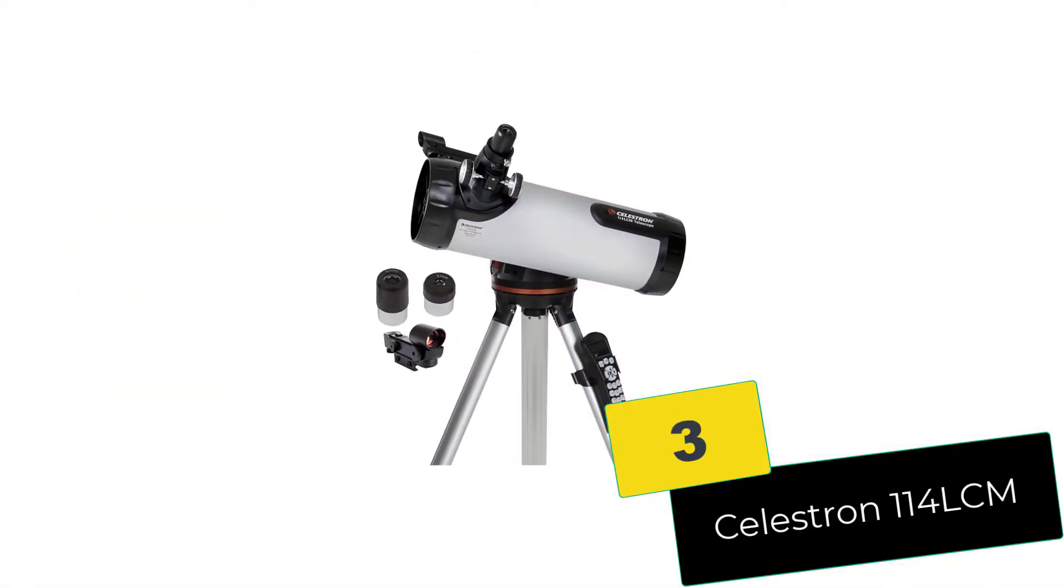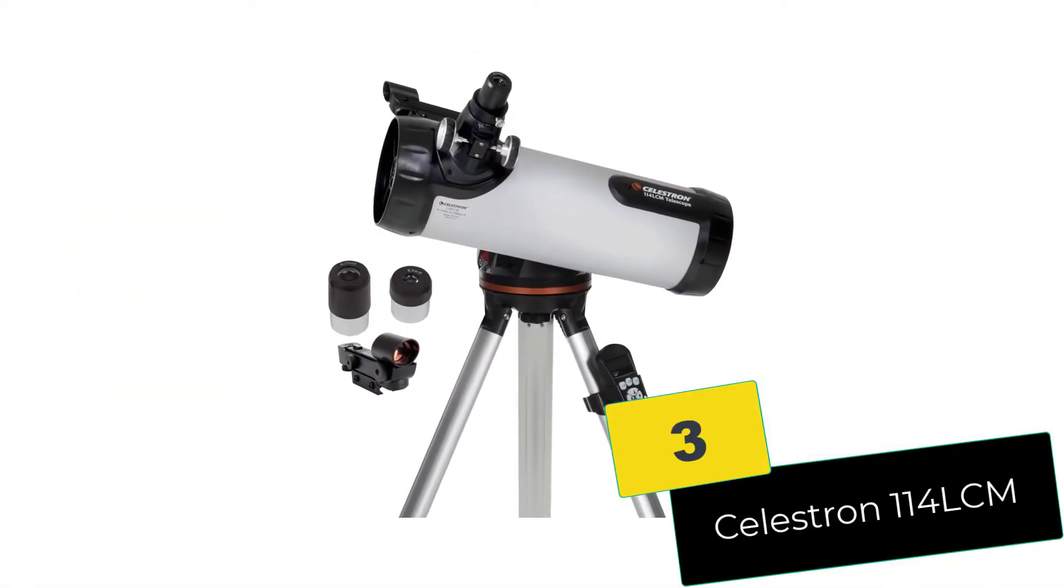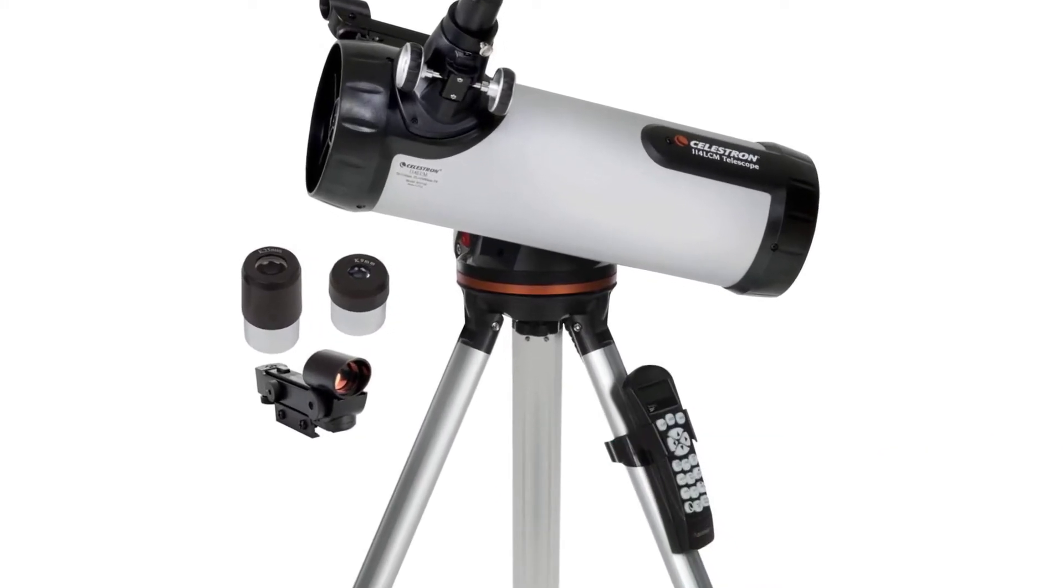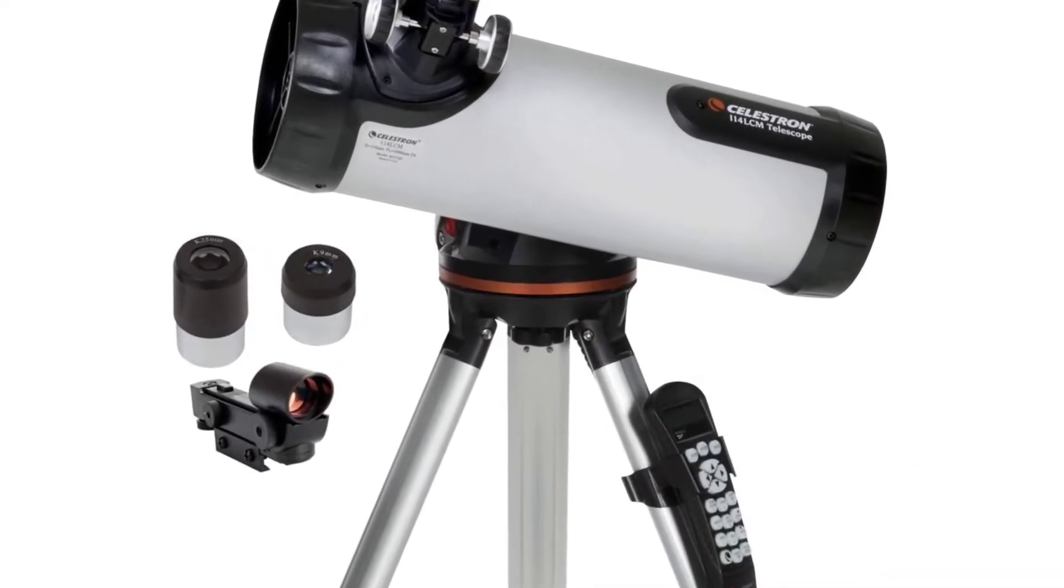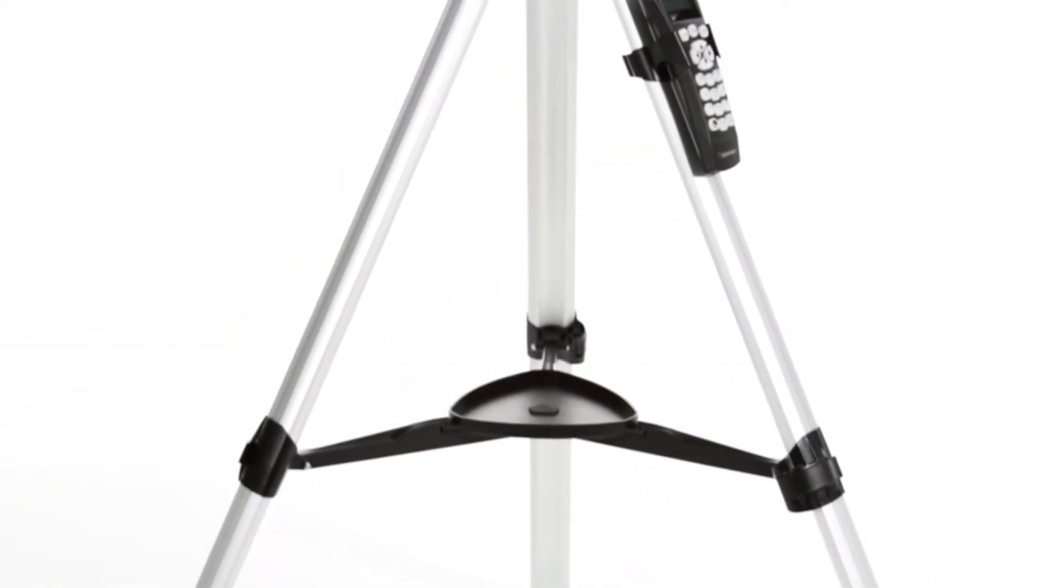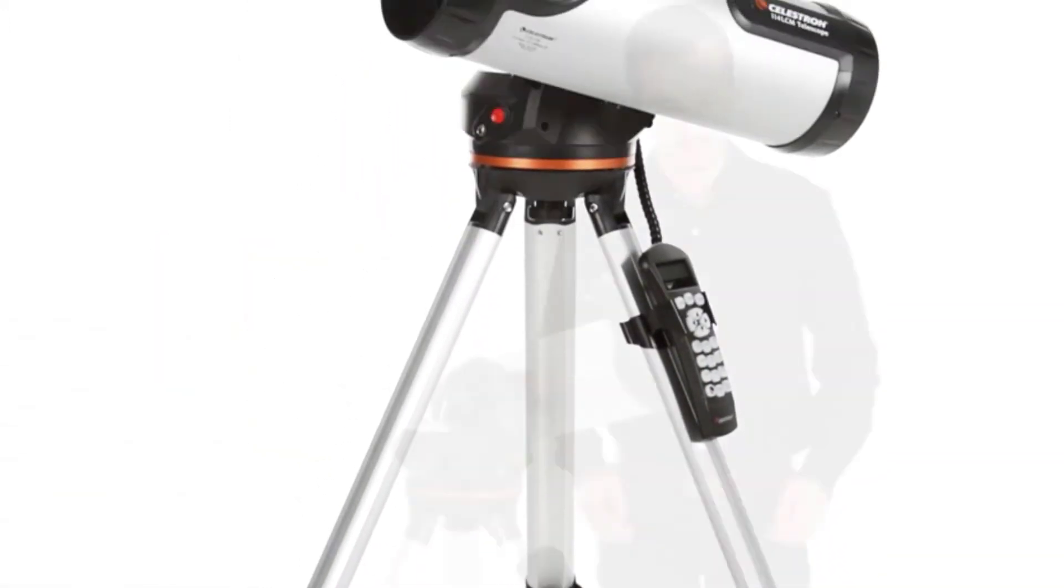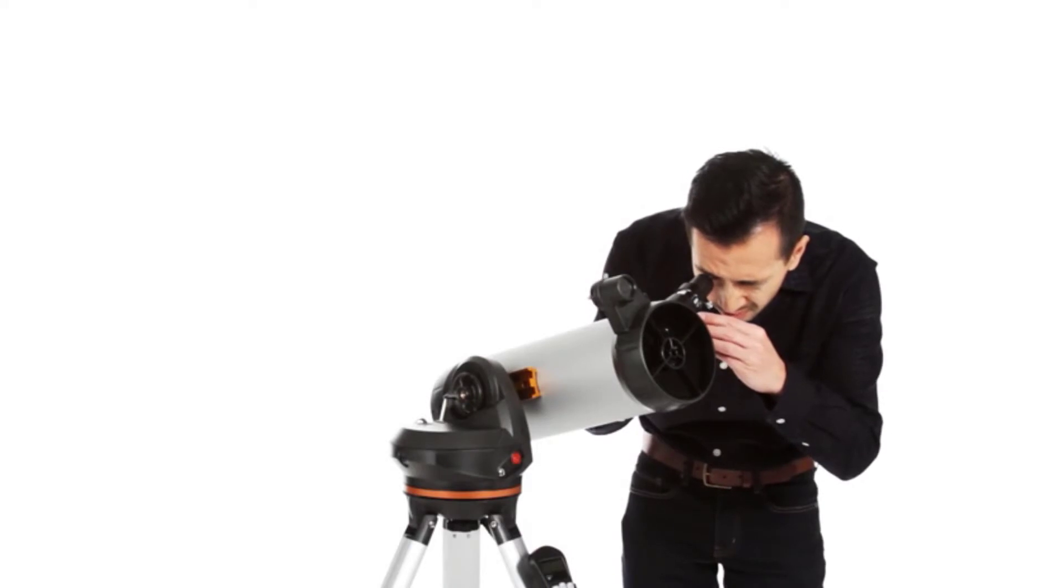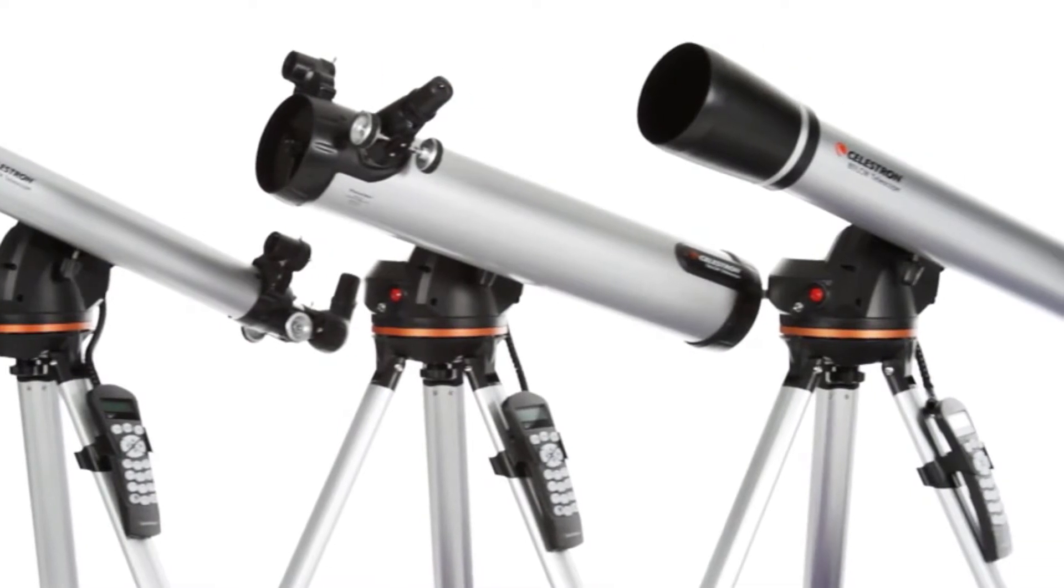At number 3, we have the Celestron 114 LCM. The Celestron 114 LCM telescope is the largest model available in the LCM line. This reflector telescope features a 4.5-inch primary mirror that gathers enough light to see the fine details of any of the celestial objects you are interested in.